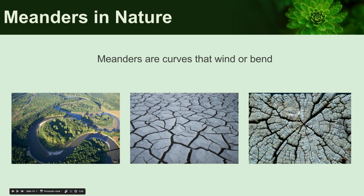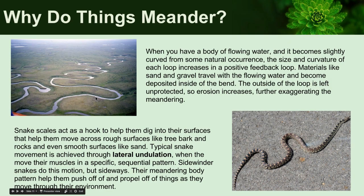Meanders are shapes or curves that wind or bend. Obviously rivers are the prime example. If you have a flowing body of water carrying sand, dirt, and other material, and it starts to curve even slightly, the material it's carrying will be dropped on the inner bank while the outer bank gets bombarded with flowing water. Eventually that outer bank erodes away and the curve increases — it's kind of a positive feedback loop. That's how rivers get their curvy shape through the landscape.